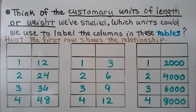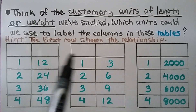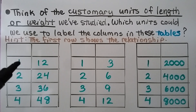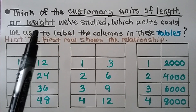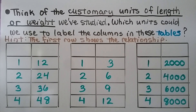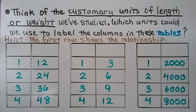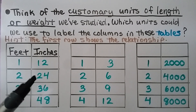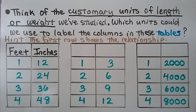Here we have three tables. Think of the customary units of length or weight we've studied — which units could label the columns? The first row shows the relationship. For 1 and 12, feet and inches is correct: one foot is 12 inches, so 2 feet is 24 inches, 3 is 36, and 4 is 48.